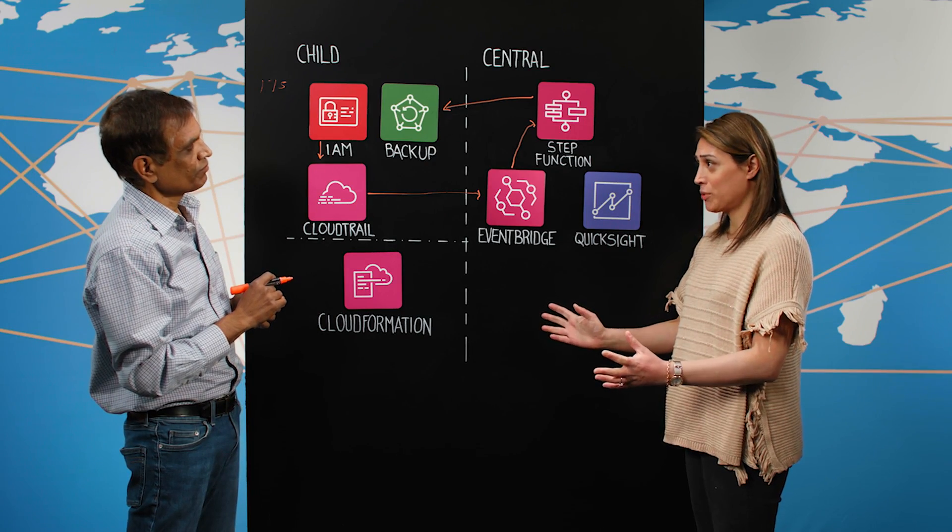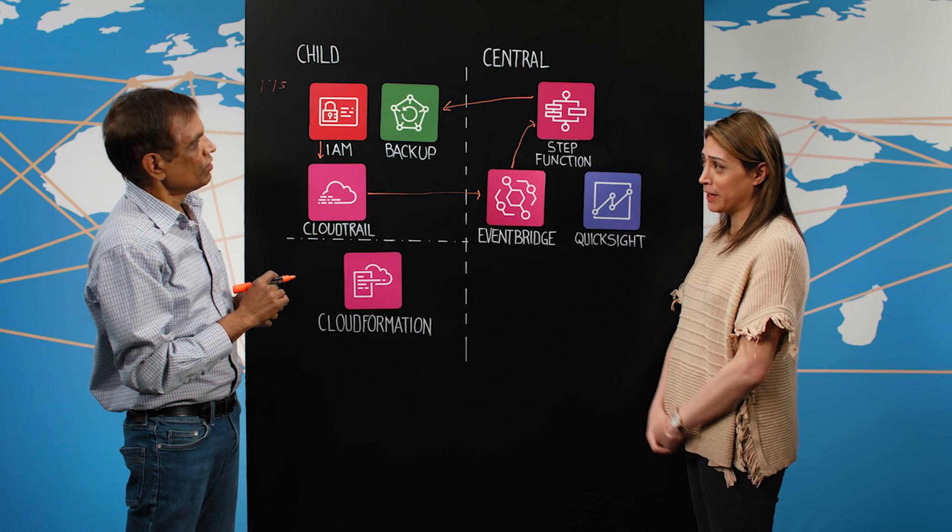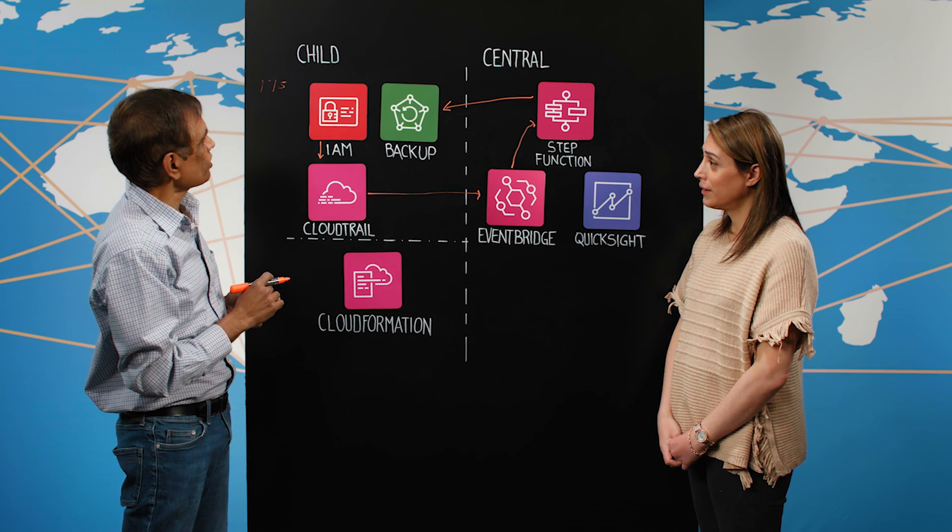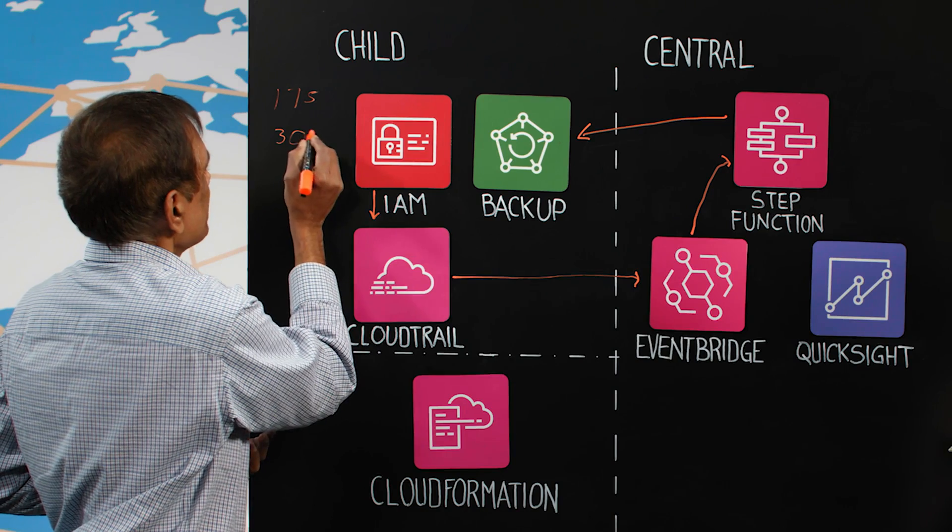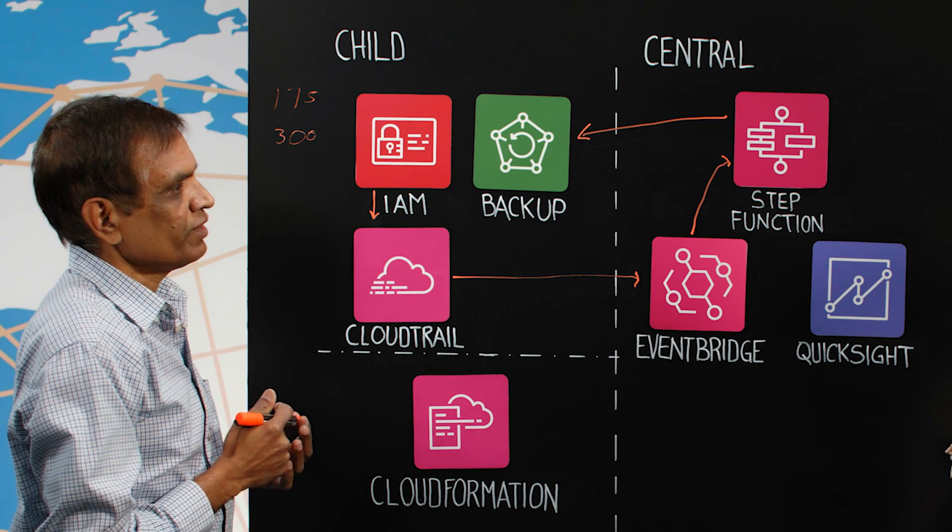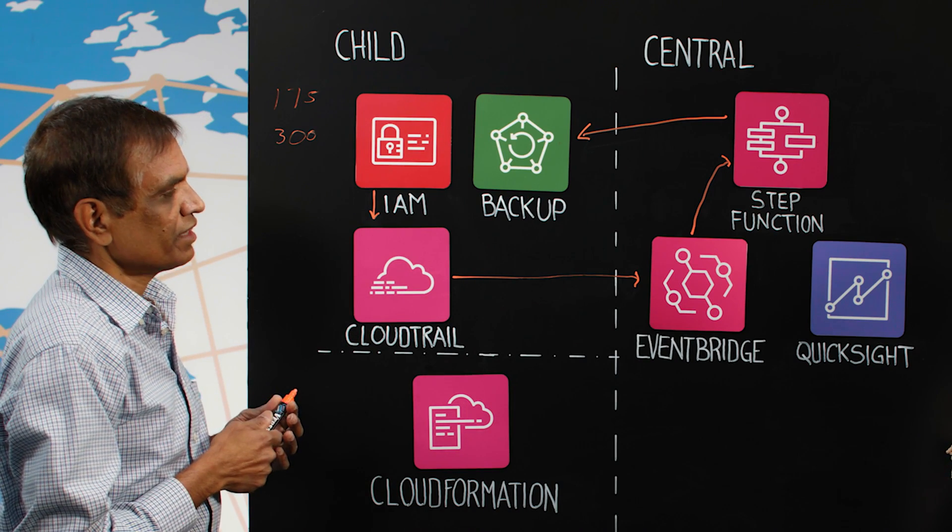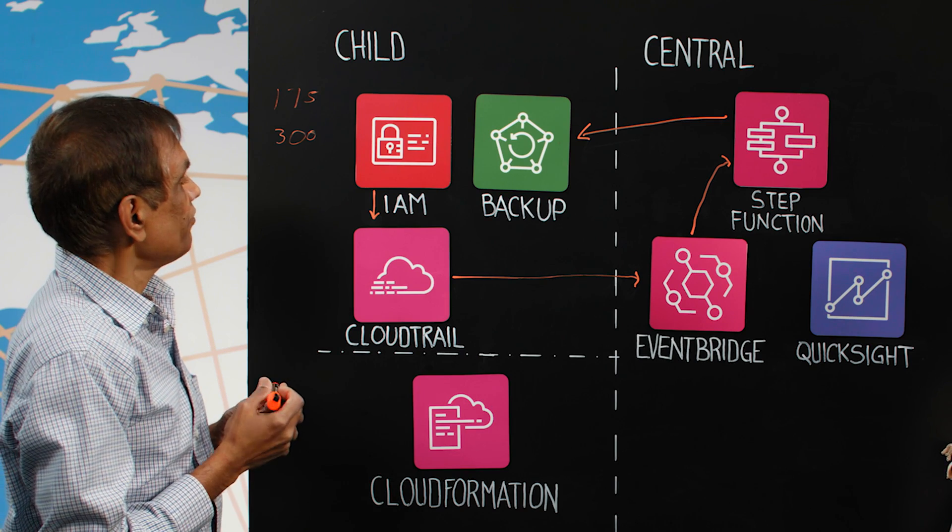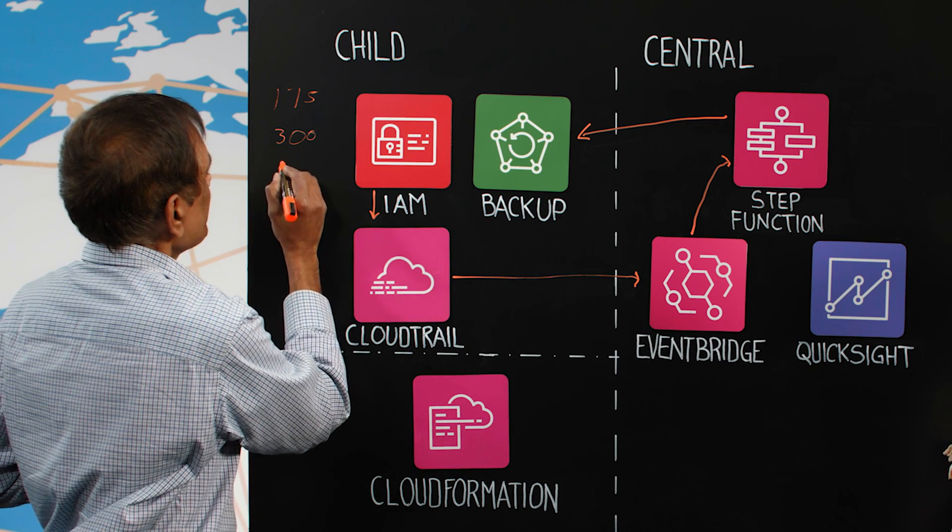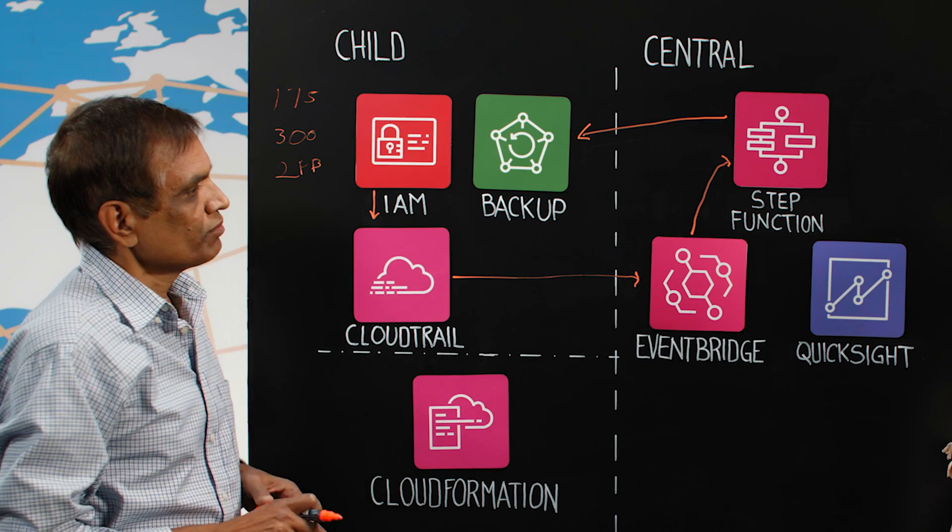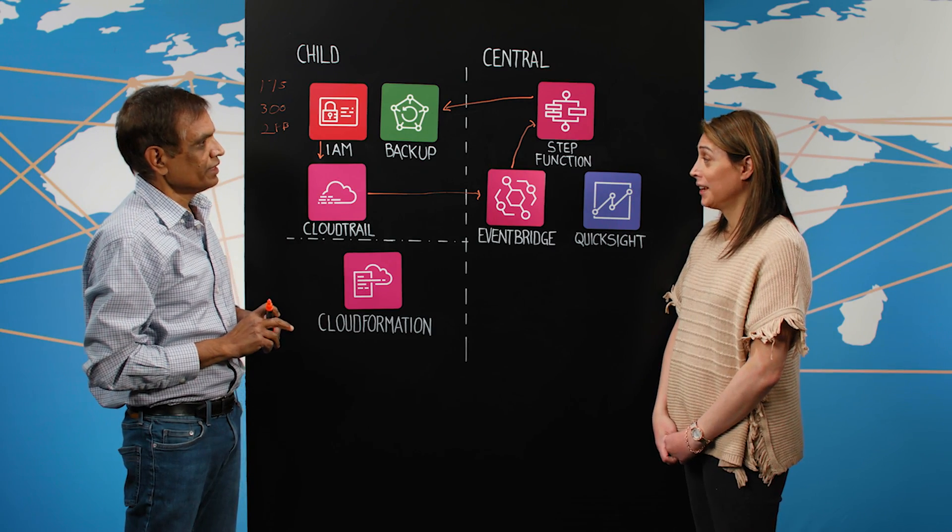And then how many applications are you protecting and how much backups are you performing? We have almost upward of 300 applications. And that number is fast increasing as AWS presence increases within United. And we almost backup two petabytes of data. That's extreme scale.